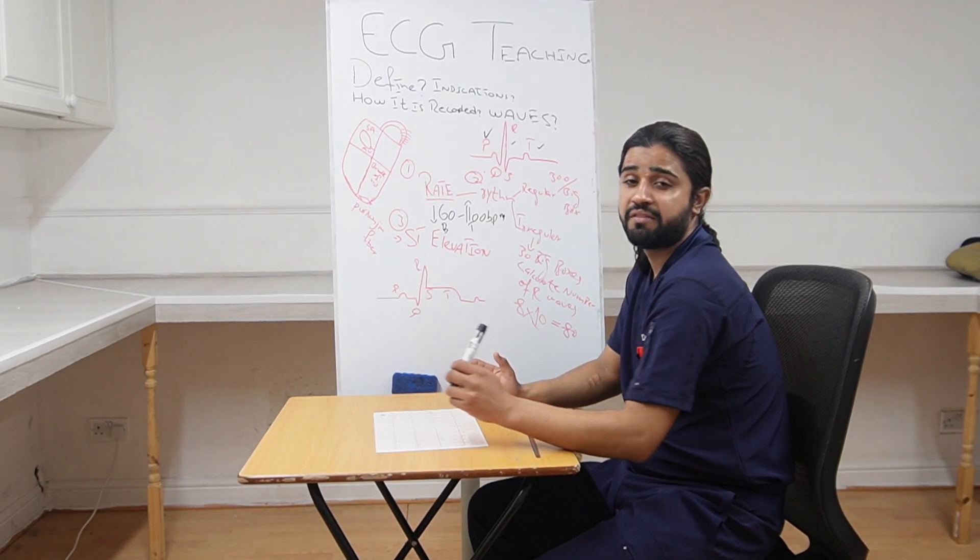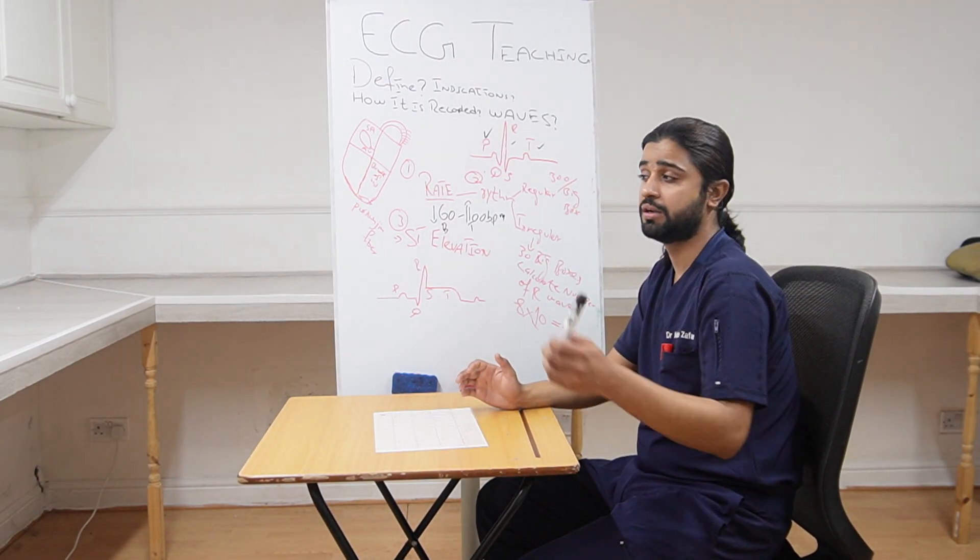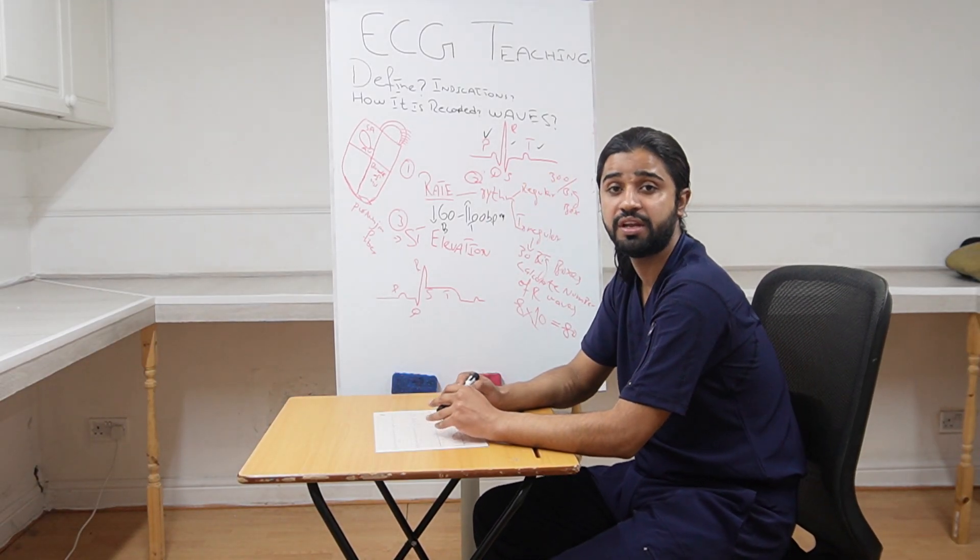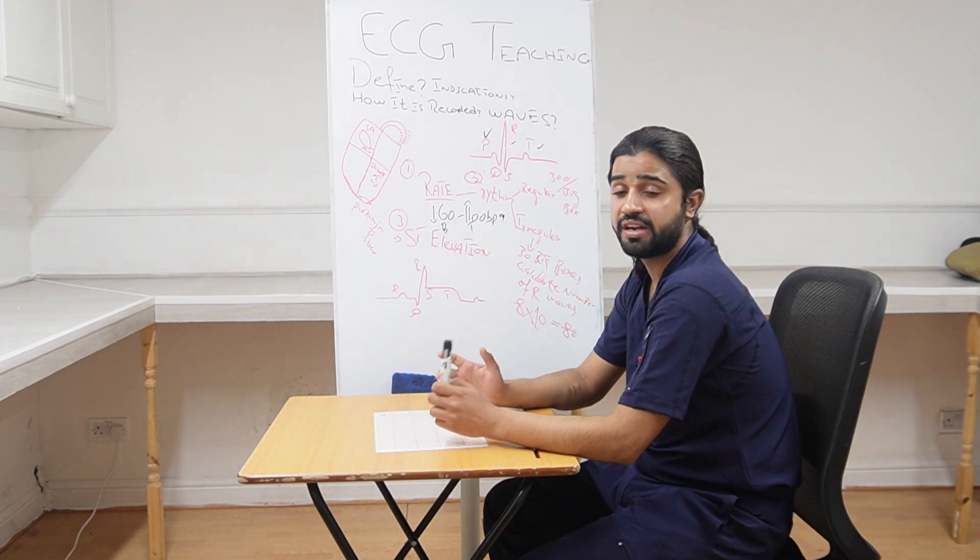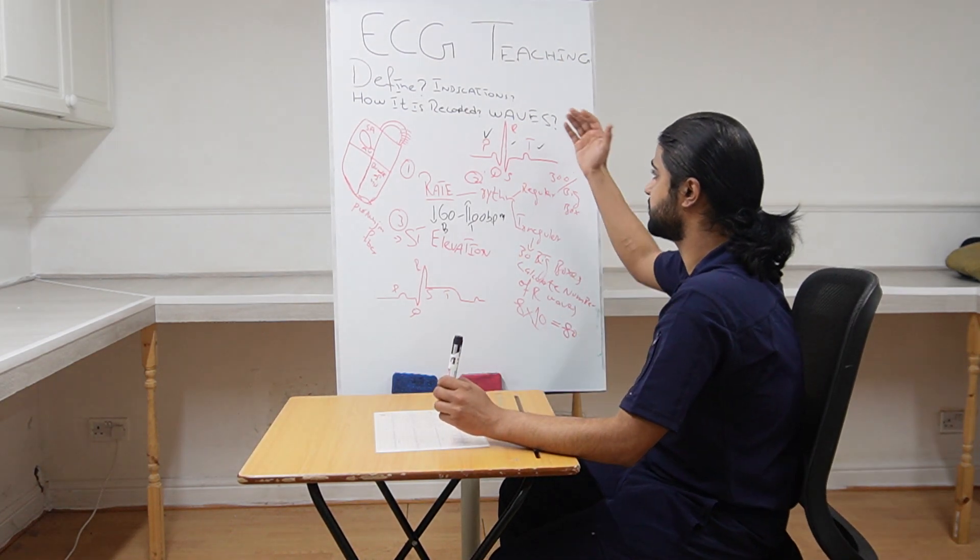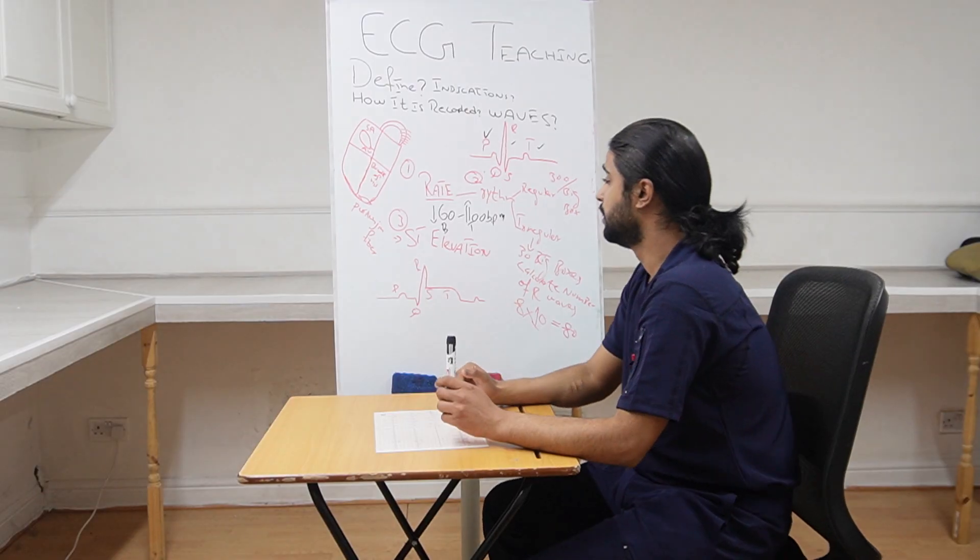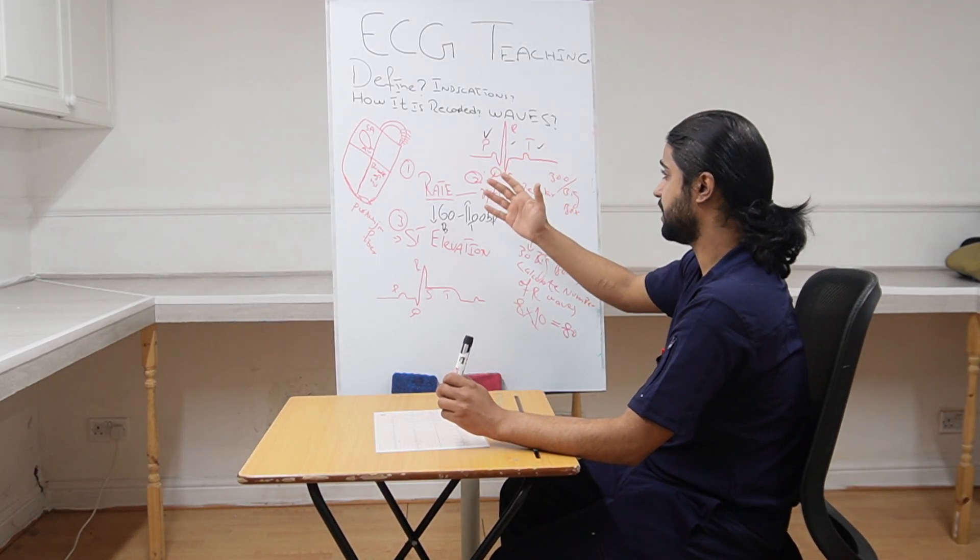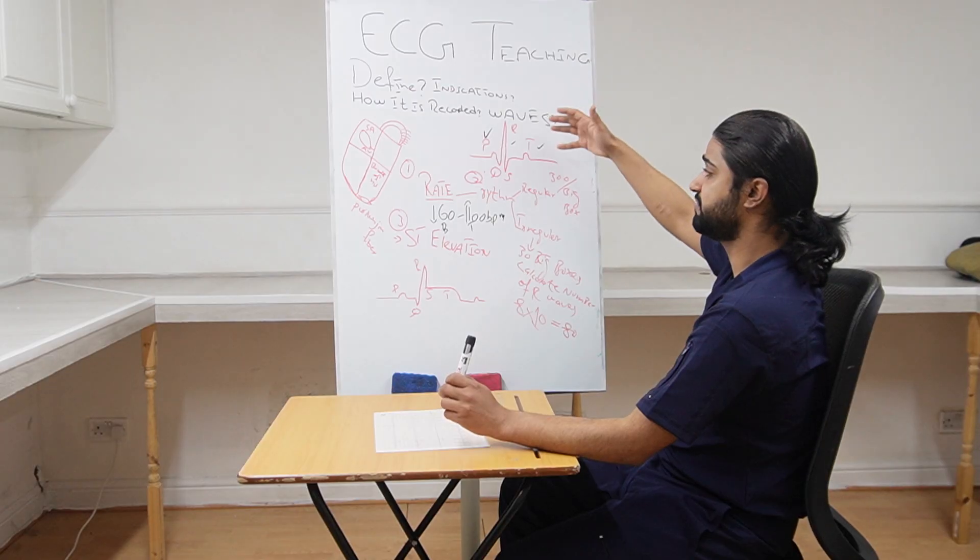Then the student must be having a question in his mind that why there is no wave form for the relaxation of the atria. So the atrial relaxation is so small, for milliseconds, that it is masked by the QRS complex. So this is the basic structure of the heart conduction system and how these waves form.